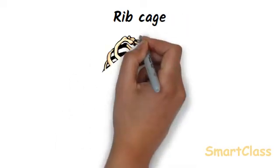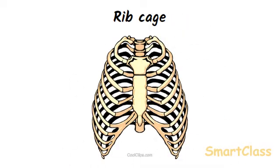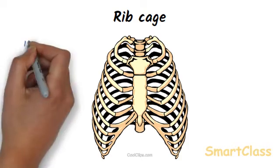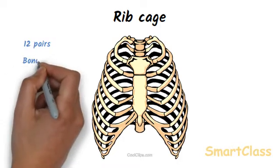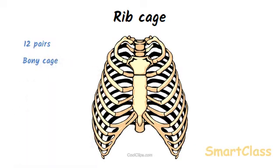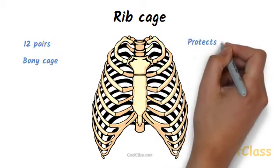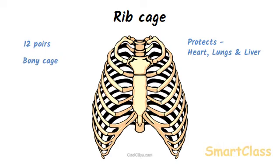Ribs are the curved bones in our chest. Ribs exist in pairs — there are 12 pairs of ribs in the chest. One end of all ribs is joined to the backbone and the other end is joined to the breast bone. In this way, all the rib bones, a part of backbone, and the breast bone join to form a bony cage called the rib cage. The rib cage protects delicate internal organs like heart, lungs, and liver. The rib cage also takes part in our breathing movements.